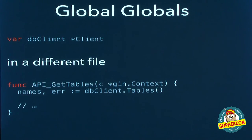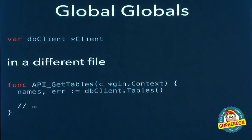Another thing I saw that I don't have a slide for: really huge functions — 60, 70 lines. Sometimes a big function doesn't need to be refactored, but a lot of the time it's really hard to read and know what's going on in each section. Pull out little sections, name a function something that makes more sense, something more readable, so you can look at the code and know what's happening.